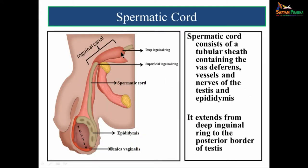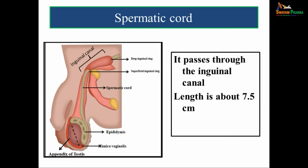The spermatic cord is the one which suspends the testes. It consists of a tubular sheath containing the vas deferens, vessels and nerves of the testes and epididymis. It extends from the deep inguinal ring to the posterior border of the testes. The spermatic cord passes through the inguinal canal, and its length is about 7.5 centimeters.